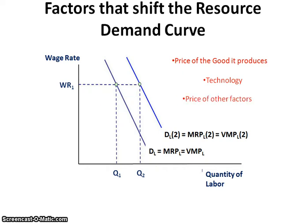The other thing that can shift the demand for a resource is the price of other factors — think of it like an input price. If the price of other factors goes up, then it makes this labor or this resource more affordable, and as a result the demand for that resource will go up. The converse is true: if I can substitute one for the other and the other one's price is going down, then the demand for this one will go down.